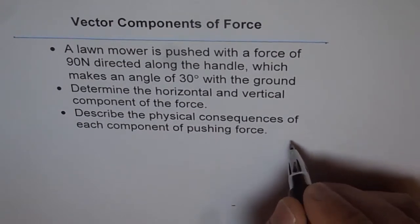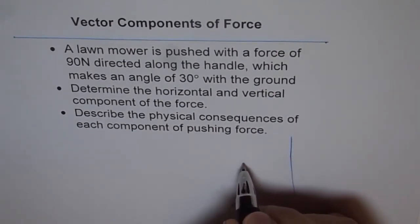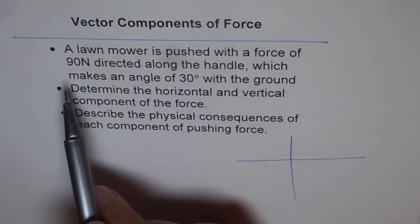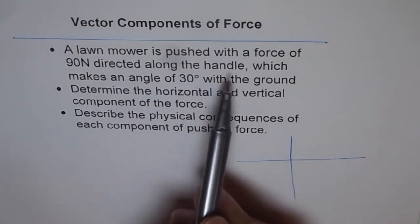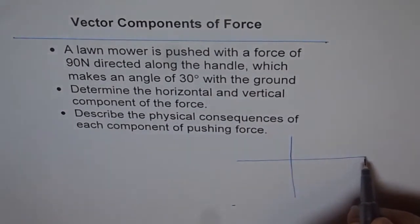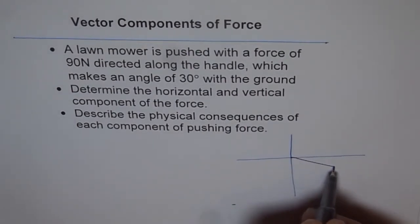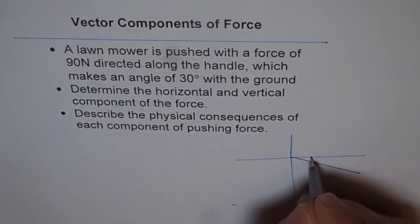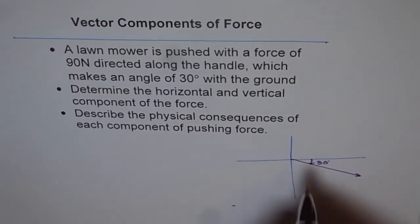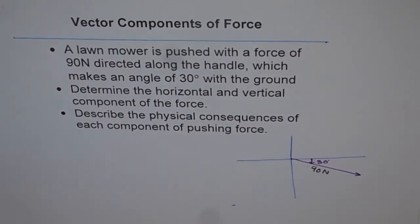We can resolve this force into horizontal and vertical components. Let's make a Cartesian plane to see how it looks. When we say the lawnmower is pushed with a force of 90 Newtons directed along the handle, which makes an angle of 30 degrees with the ground, that means — if the horizontal axis represents the ground — the force makes an angle of 30 degrees with it. That is the direction of the force, and the force is 90 Newtons.